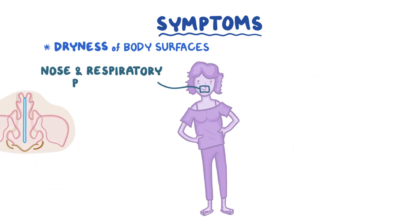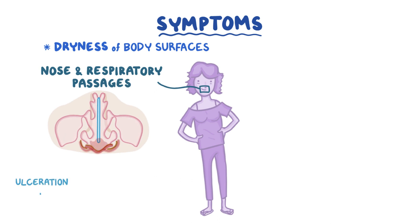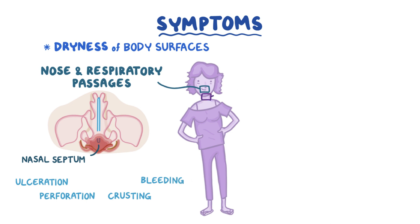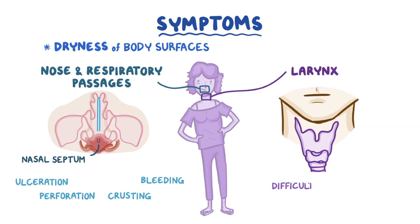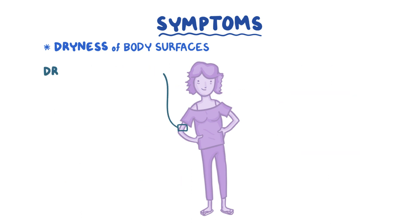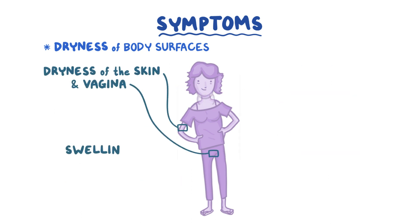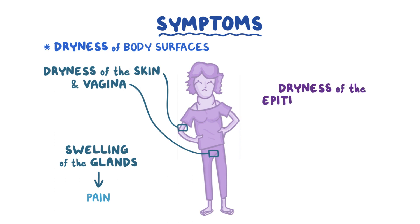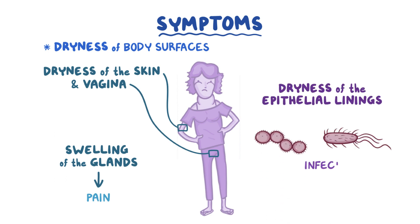In the nose and respiratory passages, it causes ulceration and perforation of the nasal septum, and can lead to crusting and bleeding. When it affects the larynx, it can lead to difficulty speaking. In some people, there might also be dryness of the skin and vagina. There is also swelling of the glands, which can compress nearby structures like nerves and cause pain. Finally, the dryness of epithelial linings can also make infections more likely.